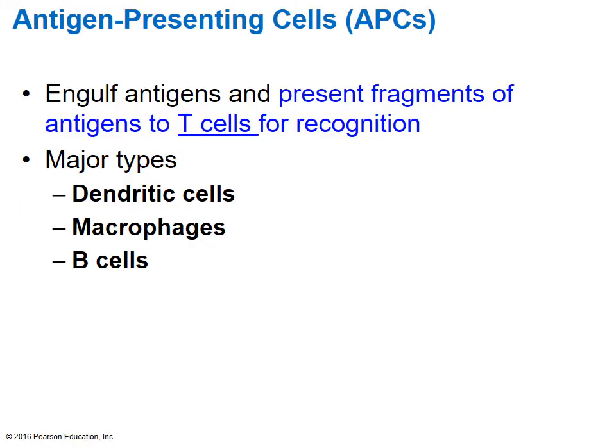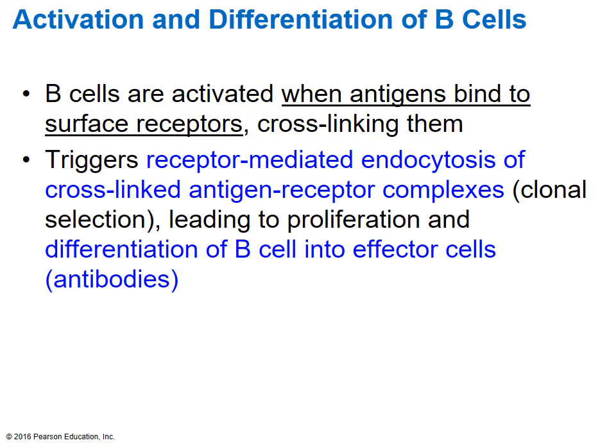Here is another look at antigen-presenting cells — they take little pieces of the foreign antigen and present it to our T cells and B cells for recognition. Remember, these are your dendritic cells, your macrophages, and your B cells. Now let's take a closer look at the B cells before we go into more detail about the T cell effector cells.